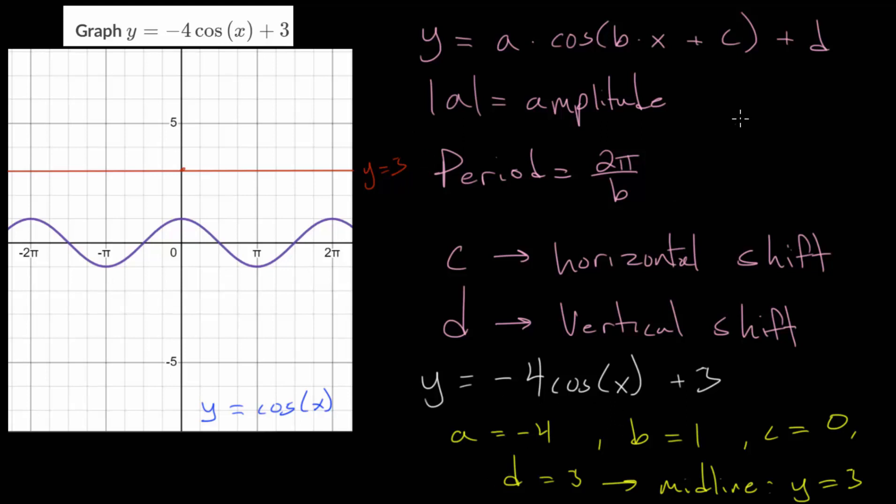Notice that we can also calculate the amplitude. We take the absolute value of a or the absolute value of -4, which is positive 4. Now, looking at our parent function here, we can see that the cosine goes to the point (0,1). When x is 0, the cosine is at its highest value of 1. So we can see the amplitude of the parent function is just 1.